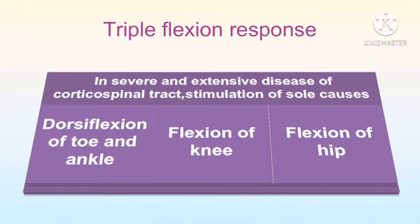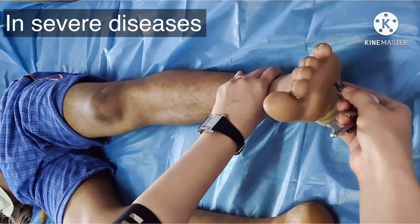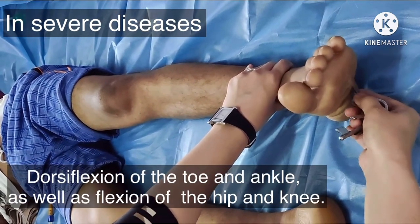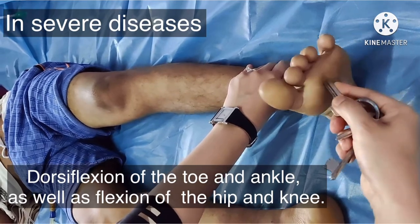What is the triple flexion response? In severe extensive disease of the corticospinal tract, stimulation of the sole causes three responses: dorsiflexion of the toe and ankle, flexion at the hip joint, and flexion of the knee joint. All these together are known as the triple flexion response. In this patient, you can see dorsiflexion of the toe and ankle as well as flexion at the knee joint and hip joint.